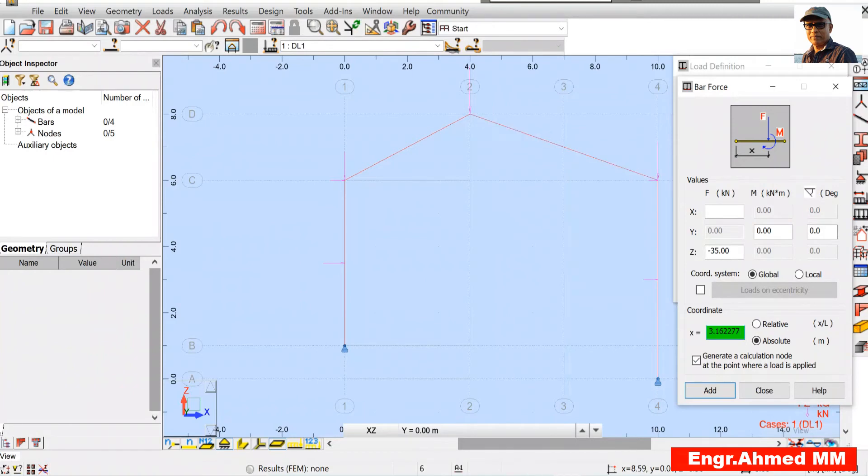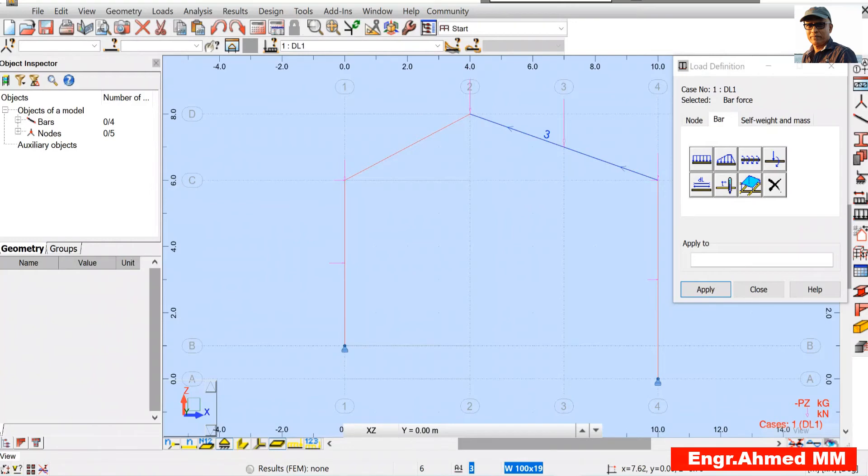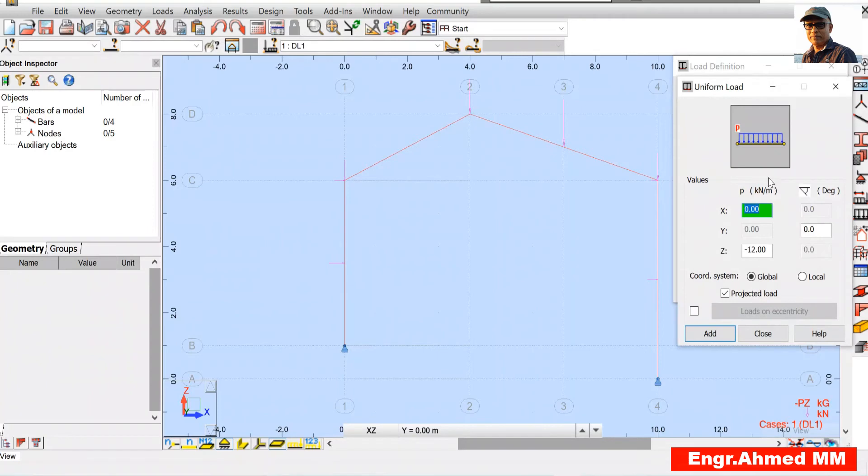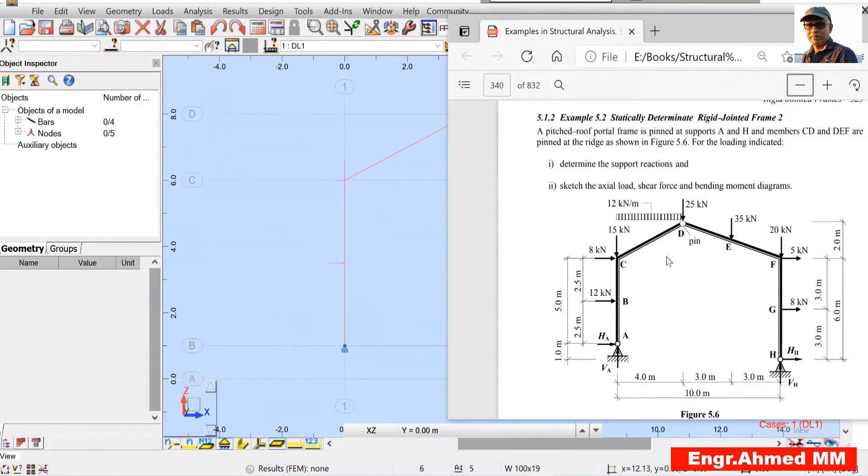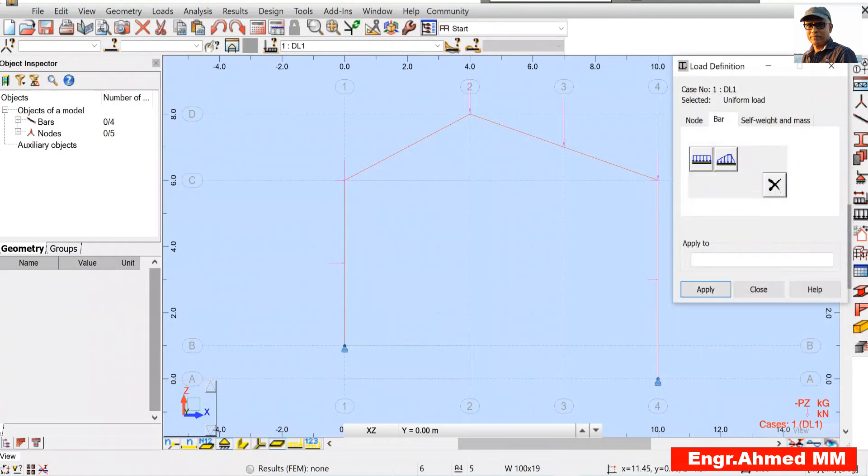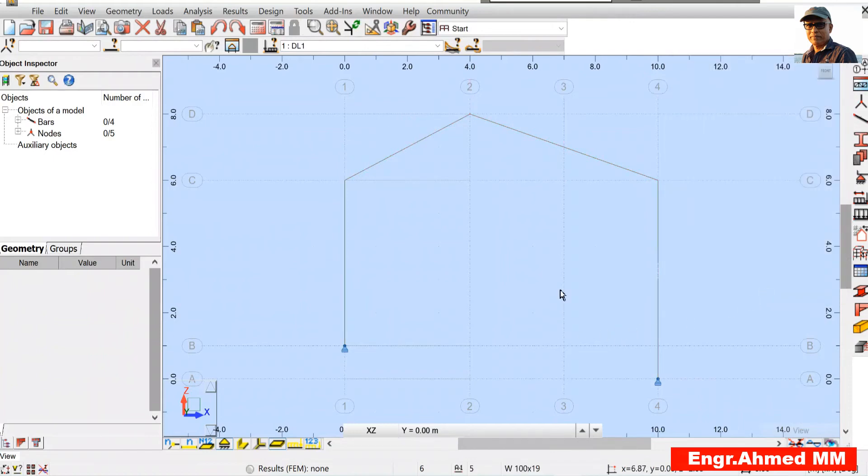So 35. Let's start here. We'll go for the bars, for this. And here say x-axis there will be nothing. Then here we have to apply say minus 35. And here 3.162277, because I used calculator. So minus 35, it will be working vertically down, so opposite of this z direction, so minus. And this is the distance from here to here along the members. Make sure this is global, this is absolute. Edit, click on the bar, you got the loads done.